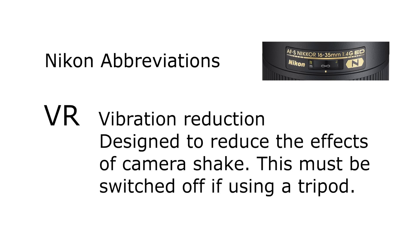VR means vibration reduction, which means the lens is designed to reduce the effects of camera shake. That's very useful if you're doing handheld photography in low light or using a particularly large lens. This is an automatic function, so it's very important to remember that if you put the camera on a tripod, you should turn this function off. Because if it's on a tripod and very steady, the VR lens will actually compensate for a blur that's not there and counter-intuitively will put blur into your picture. So always remember: if you're on a tripod, switch VR off.